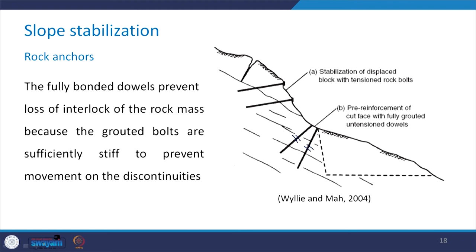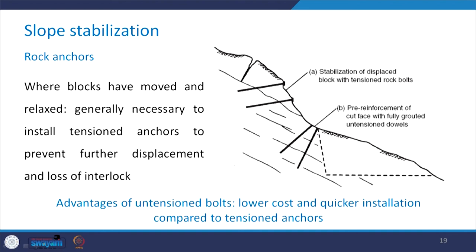When blocks have moved and relaxed, it generally becomes necessary to install tensioned anchors to prevent further displacement and loss of interlock, as shown in the portion where tensioned rock bolts have been used. The advantage of un-tensioned bolts includes lower cost and quicker installation compared to tensioned anchors. But both have their own merits and demerits, and according to the field situation, you need to decide which one will serve the purpose better.